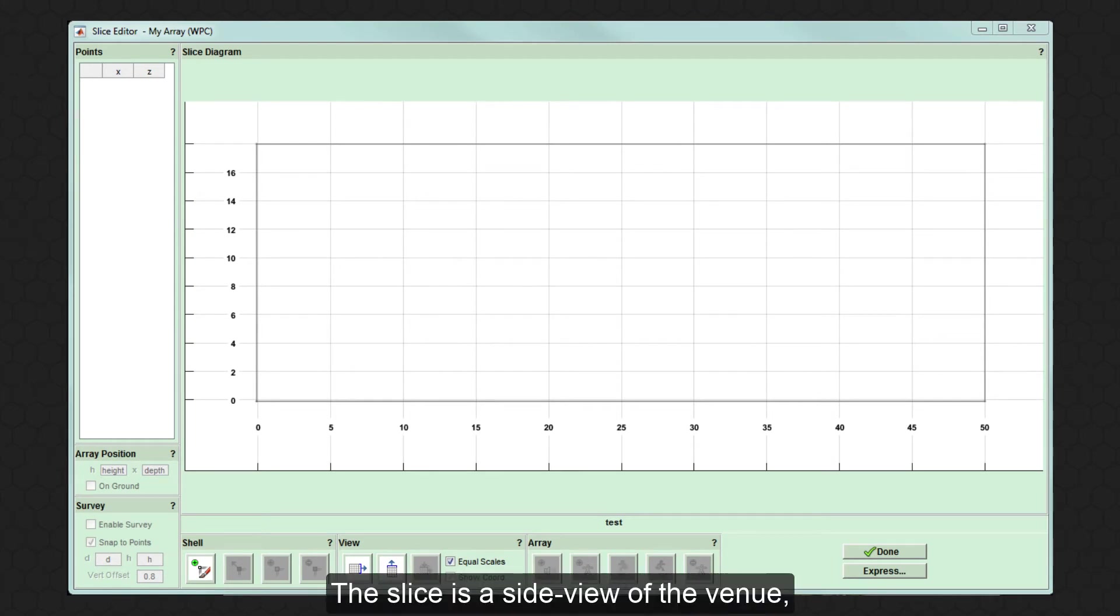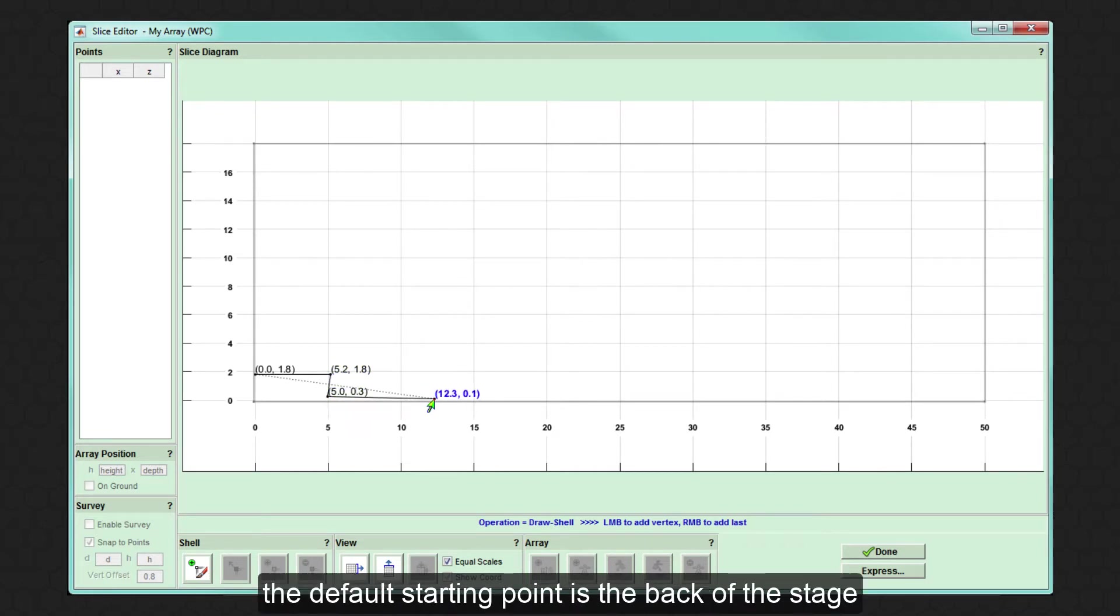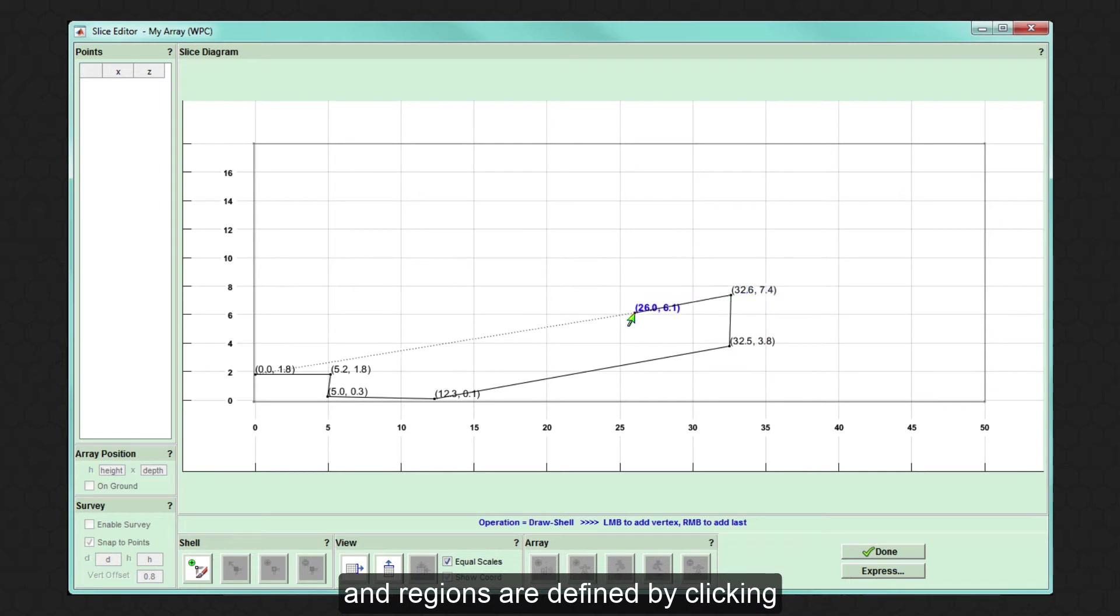The slice is a side view of the venue, usually on axis to the array. Click on the New Shell button to start. It must be drawn anti-clockwise. The default starting point is at the back of the stage and regions are defined by clicking to place vertices throughout the venue.